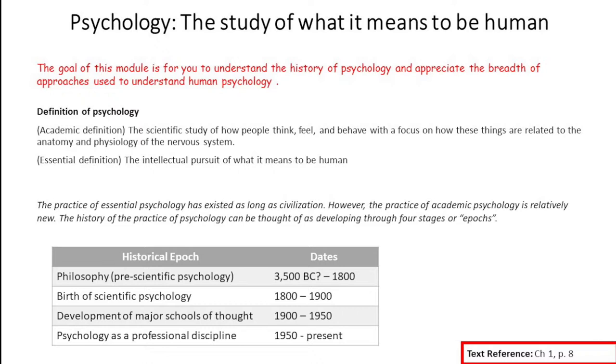The first part is that it's the scientific study. Psychology is a science. Science is a method of gathering information such that it gives you a higher likelihood of finding the actual truth. The goal of this class is not for me to give you my opinion. What we are interested in in the field of psychology is understanding how people actually function, and to do this we need to use scientific methodologies.